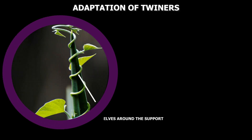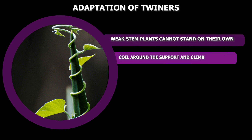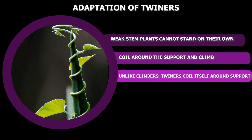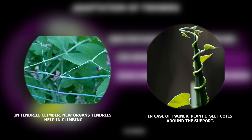Adaptation of twiners. Some weak stem plants coil around the support — these plants are called twiners. Clitoria and jasmine are examples of twiners. In the case of tendril climbers, a new organ called tendril helps in climbing, but in the case of twiners, the plant itself coils around the support.